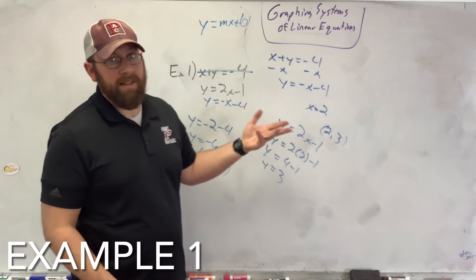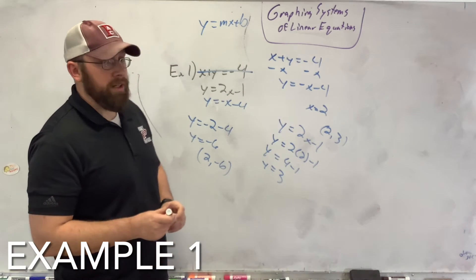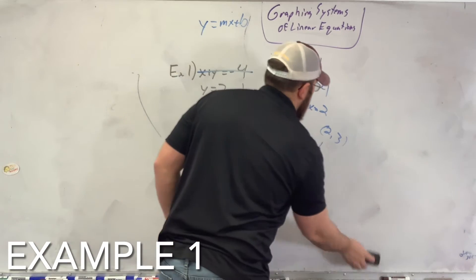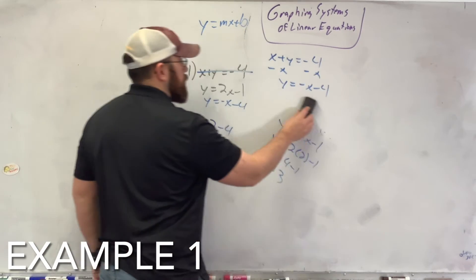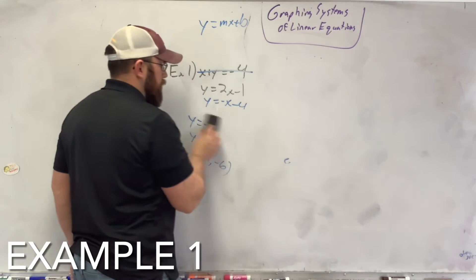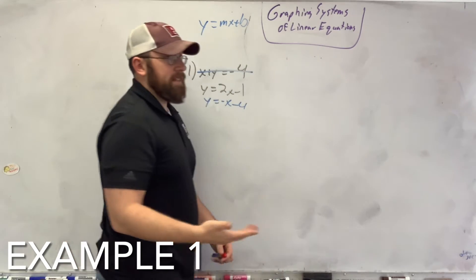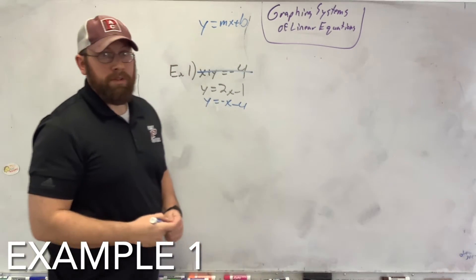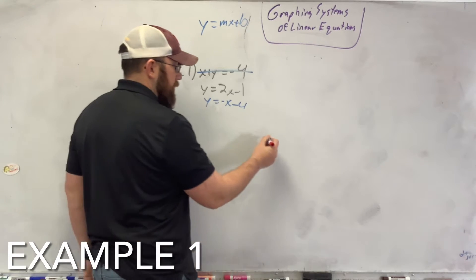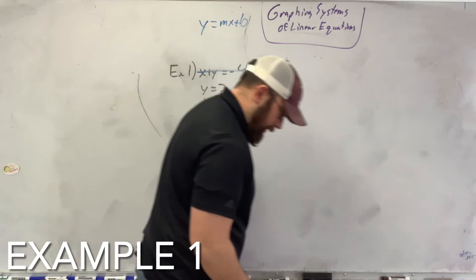So there are processes to figure it out. The first one, which we're about to show here, is graphing. When you graph two linear equations, they will usually cross if they are consistent equations.